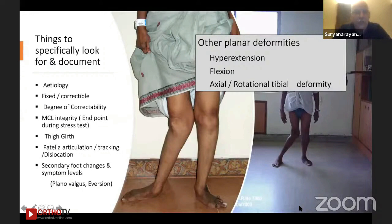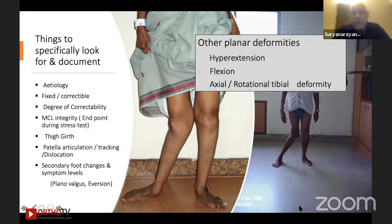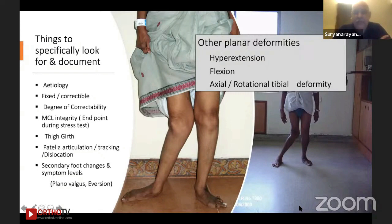Once you have a valgus deformity in your consulting office, things you specifically look for and document: etiology — very important, it speaks volumes — stiffness, inflammation, geometry, radiology, laxities, fixed or correctable deformity, and the degree of correctability. Make sure you are testing the MCL again and again; it goes stressed all the time. The endpoint of the MCL matters — if you don't get a hard endpoint, it is compromised. The tibia also has a factor in how much correction we do or whether we leave some residual valgus, because if you totally correct in high tibial cases they are never happy functionally.